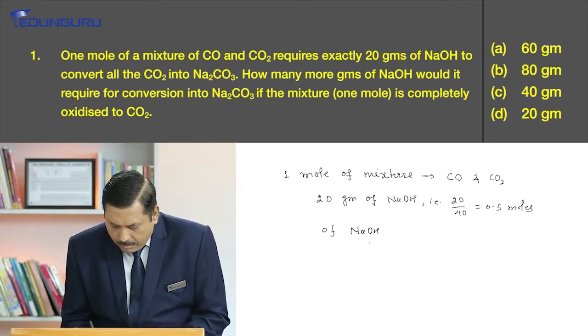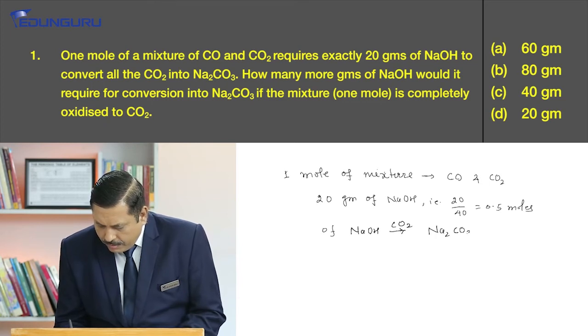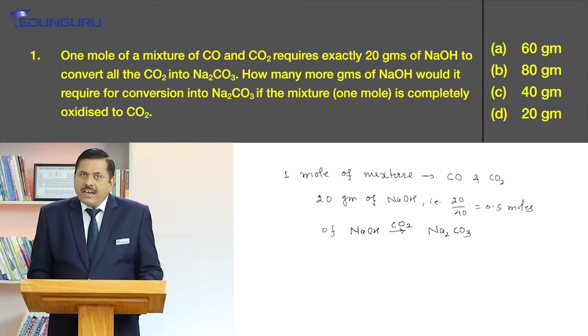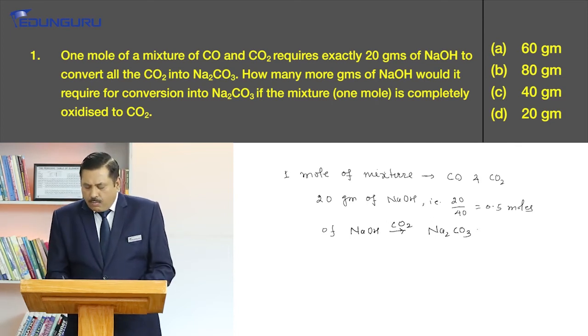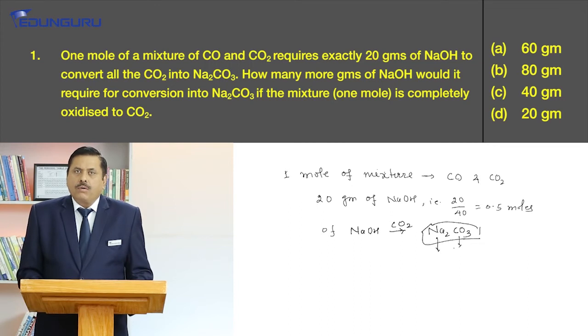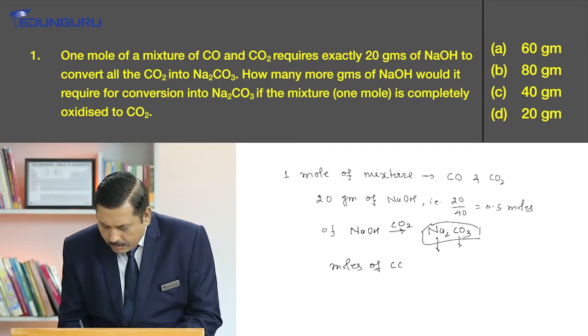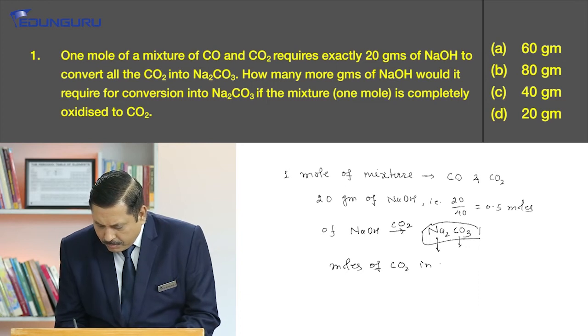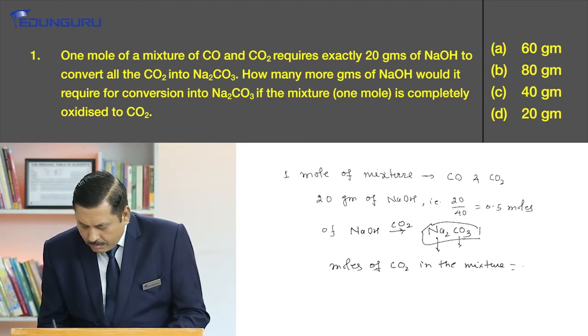Therefore, NaOH plus CO2 will give Na2CO3. It is very obvious that moles of carbon dioxide is half the number of moles of NaOH. That can be understood very easily - one mole of Na2CO3 contains two atoms of sodium while it contains only one atom of carbon. Therefore, moles of CO2 in the mixture is 0.25.